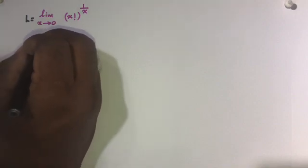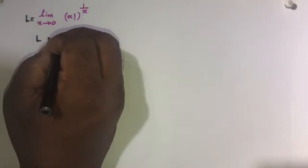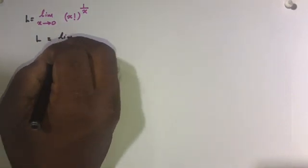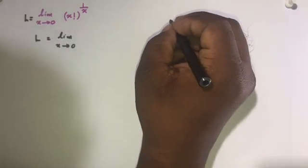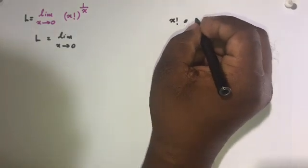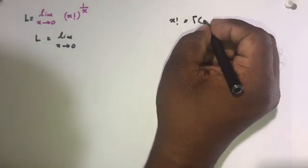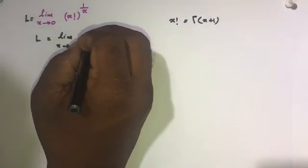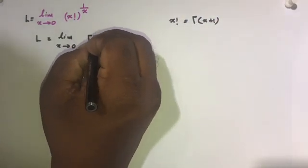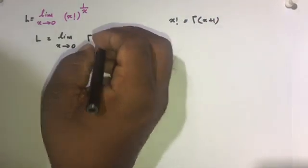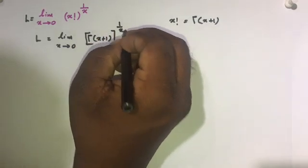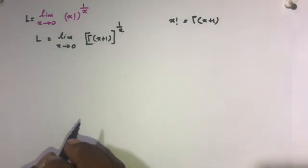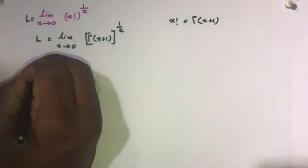First, I am going to take this limit equal to L. So we can write L is equal to the limit as x approaches 0 of x factorial. Now, we know x factorial is equal to gamma of x plus 1, so we can write gamma of x plus 1, to the 1 over x.